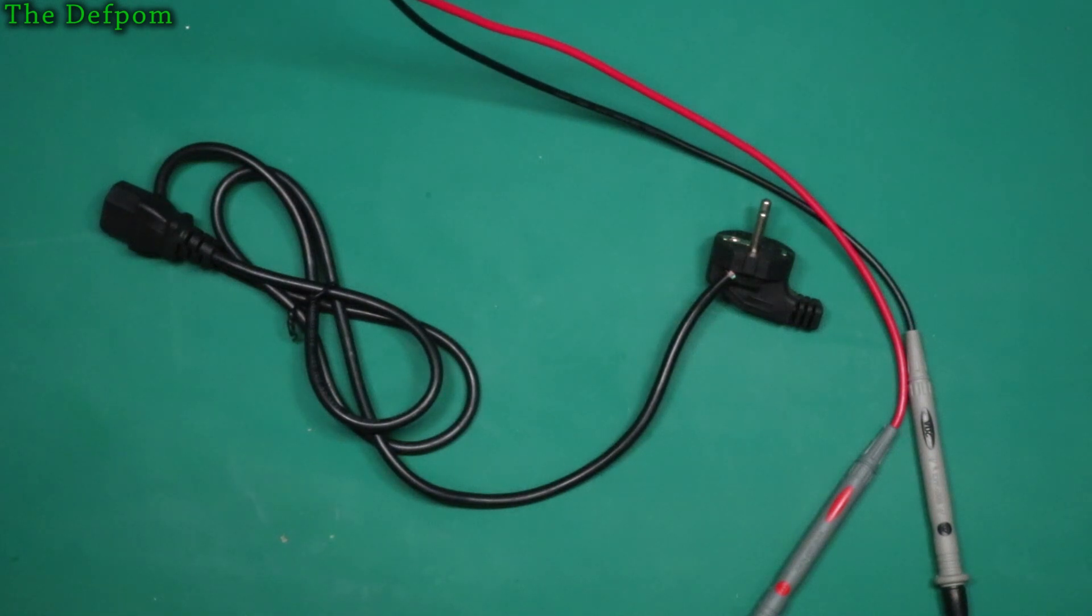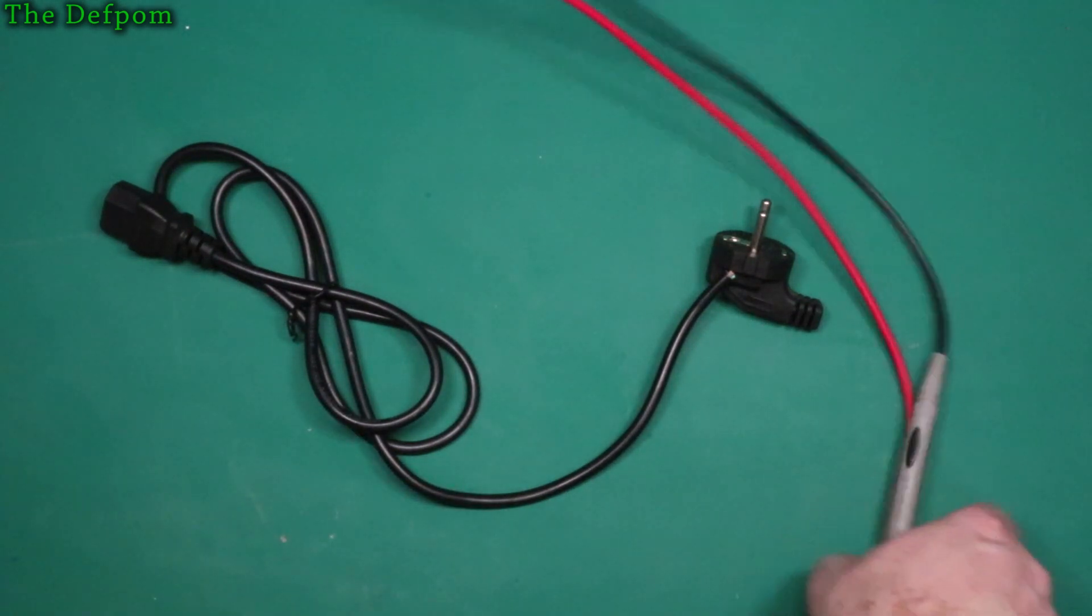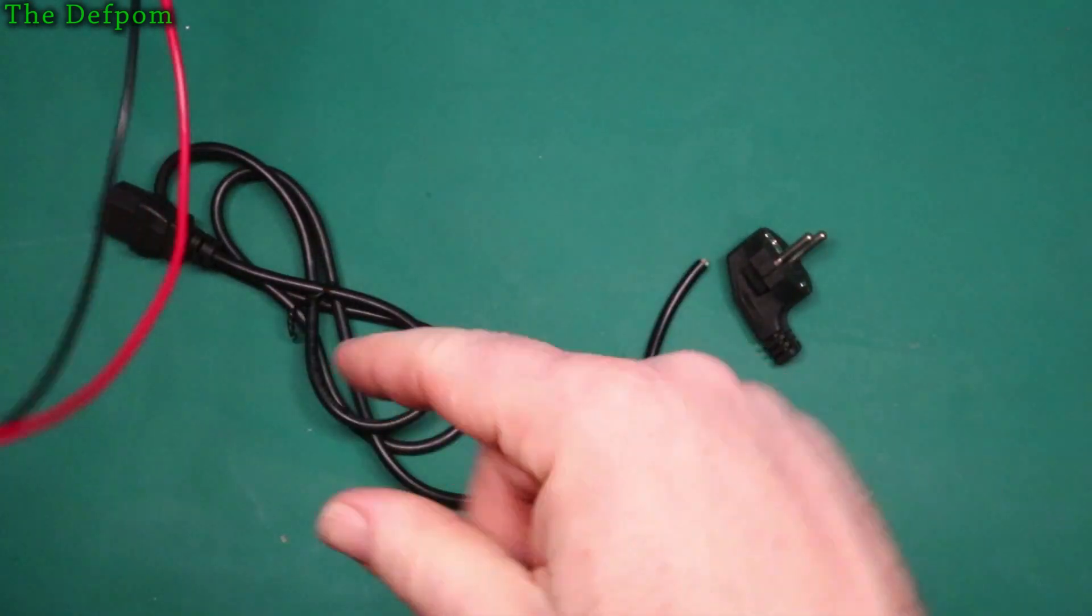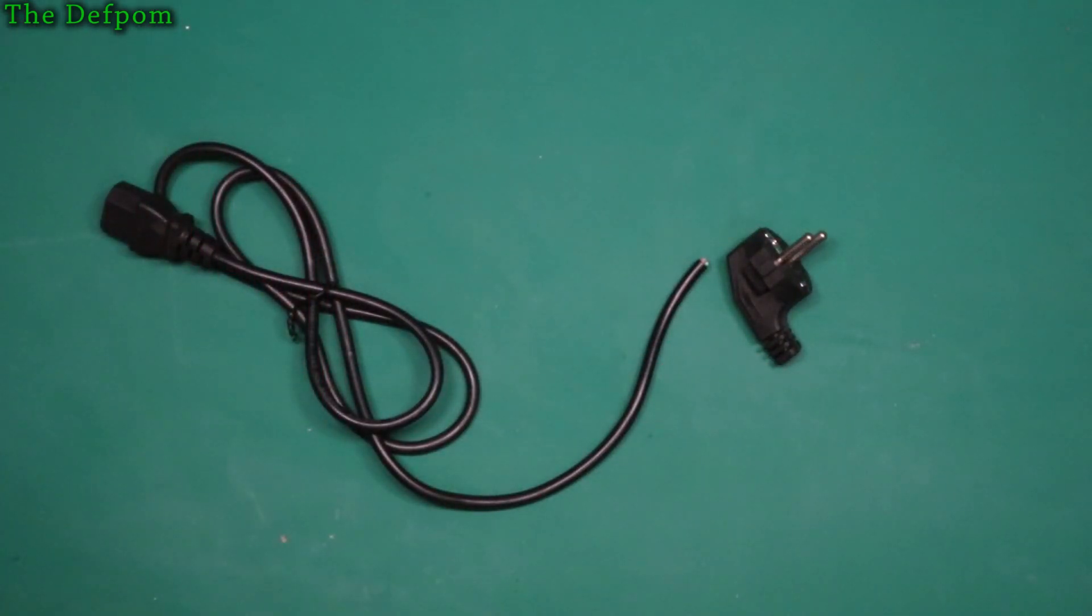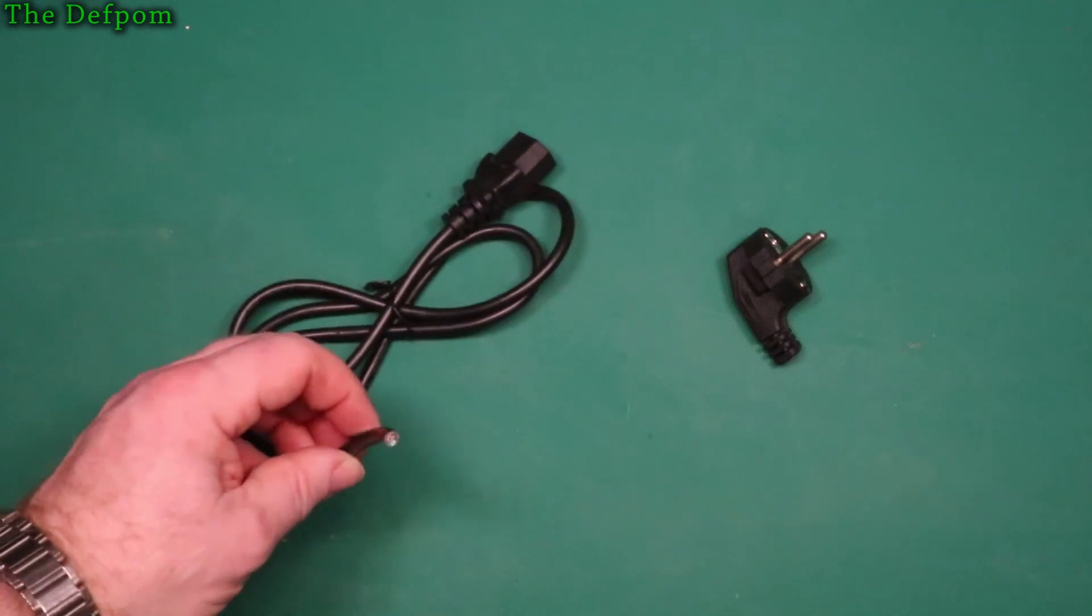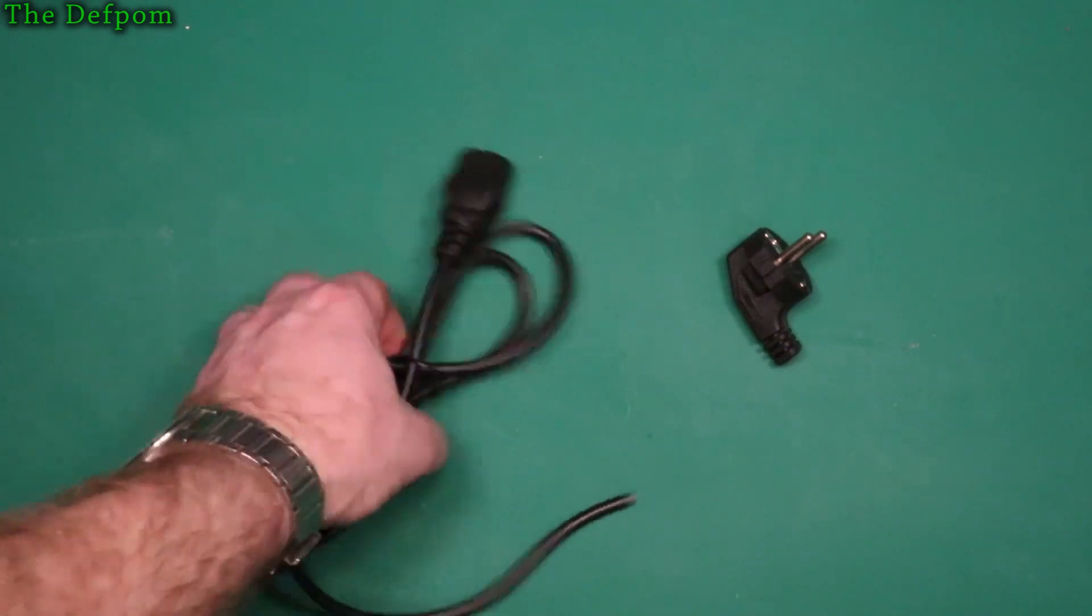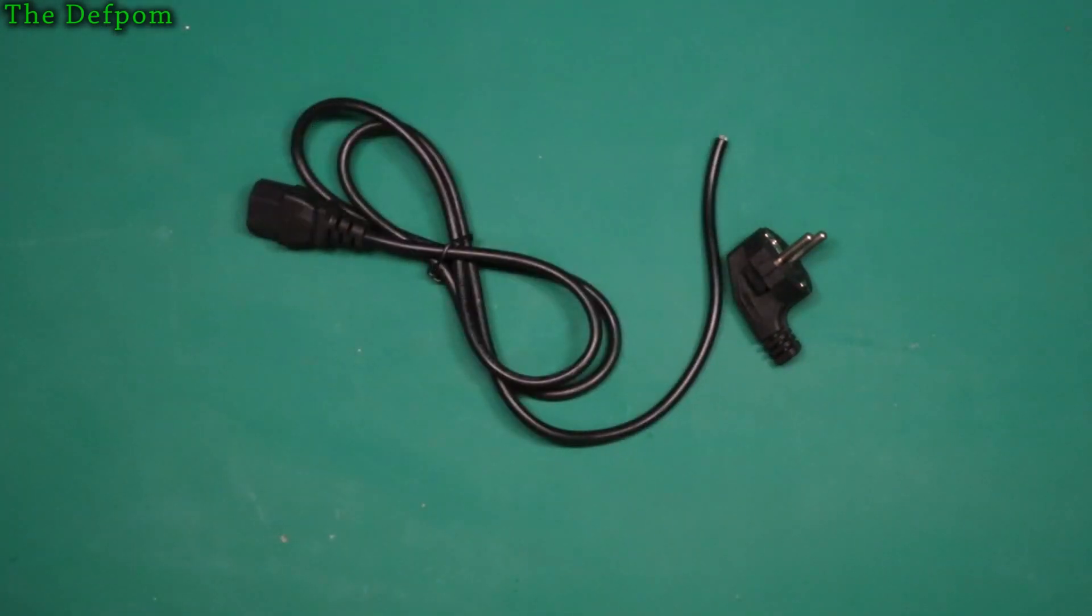Well, typically one ohm is the maximum you're allowed to have on a chassis ground on a piece of equipment, because otherwise you can't shunt to ground properly and cause circuit breaker to trip in fault currents. So one ohm is the maximum you're allowed to have, and if the lead itself is one ohm, it ain't gonna work right.